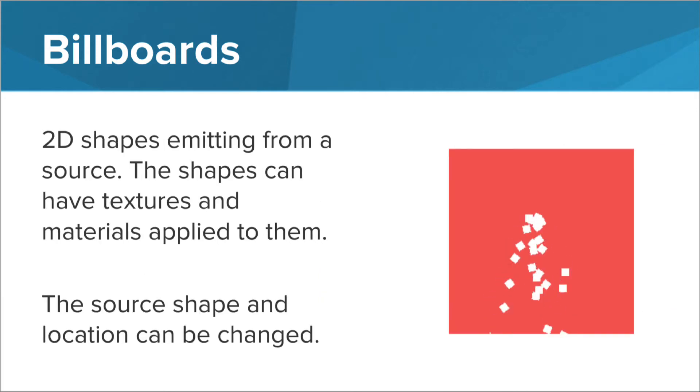Billboards, meshes, and other particle shapes emit from a source. The source shape can vary as well as the emission location. These billboards are falling from a single point source, but we could spread out the emission along the edge or face of the emission shape.